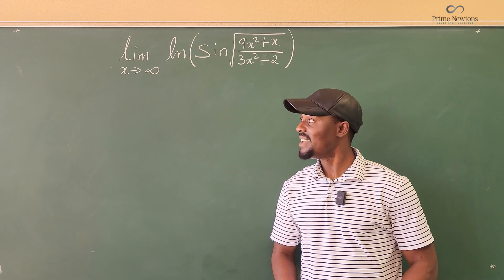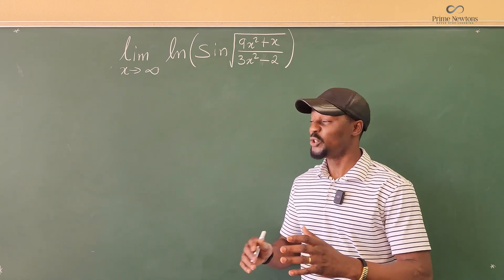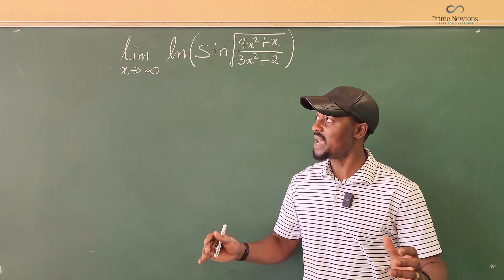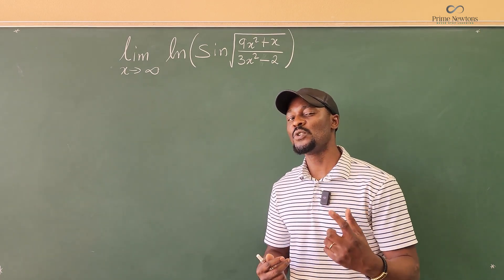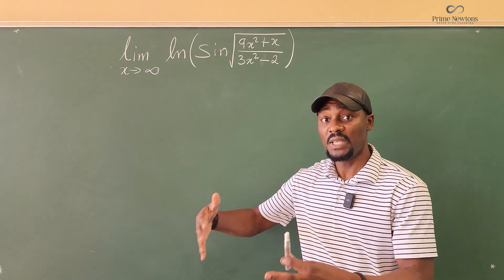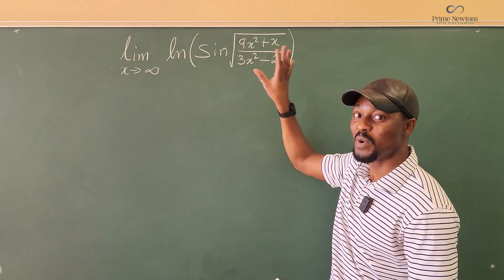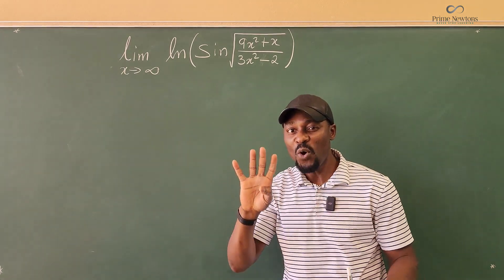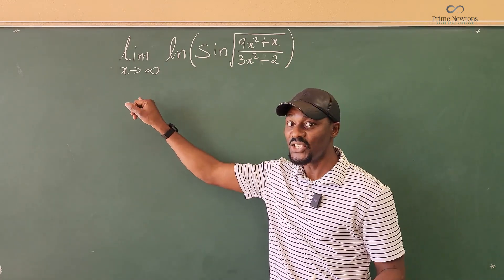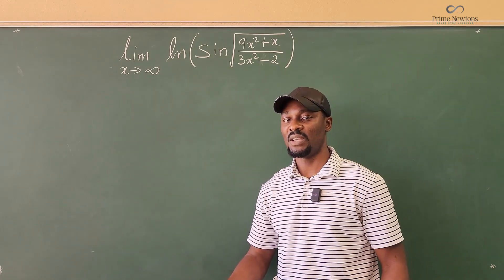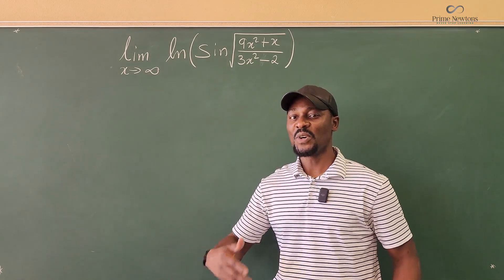Welcome to another video. If you are new to taking limits or new to calculus, this might be a troubling exercise. You might think this is difficult, but it's easy. I'm going to do it the way I would do it first, and then show you how you should do it whenever you have a composition of functions. Here we have the natural log of the sine of the square root of a rational expression — four different functions combined together — and x is approaching infinity.